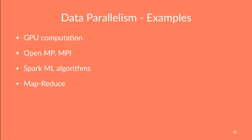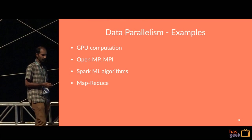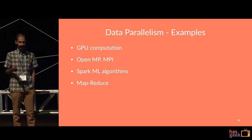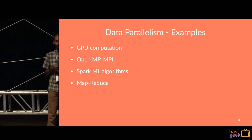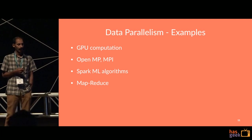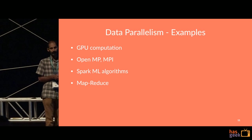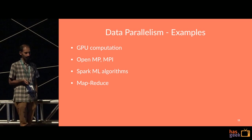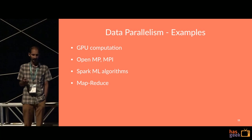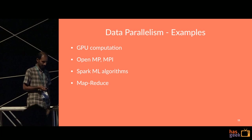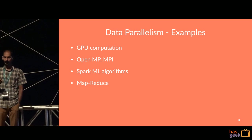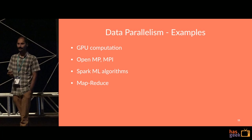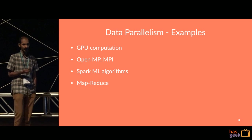OpenMP parallelizes things on a shared memory multiprocessor with multiple cores. MPI is a message passing interface that does the same thing on a distributed cluster — it takes the data, slices it, and runs it across multiple machines.